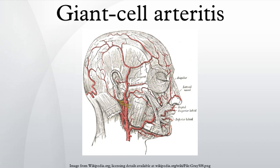In 76% of cases involving the eye, the ophthalmic artery is involved, causing arteritic anterior ischemic optic neuropathy. Loss of vision in both eyes may occur very abruptly, and this disease is therefore a medical emergency.